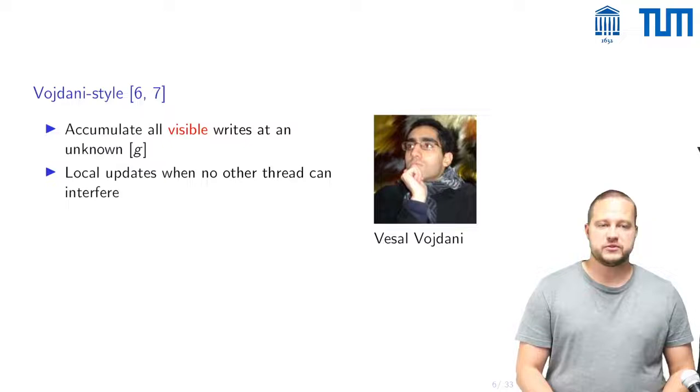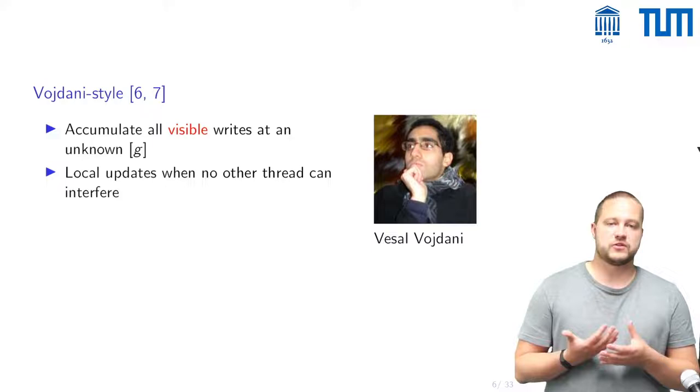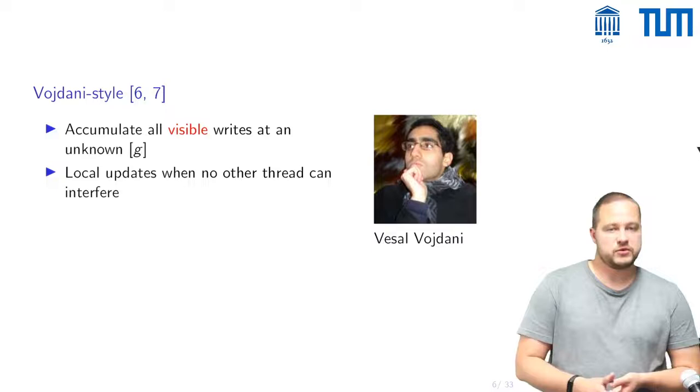The first one being the so-called Vojdani style approach. The idea there is that one accumulates all writes that are visible to other threads at an unknown G for a global G and one does local updates when no other thread can interfere.